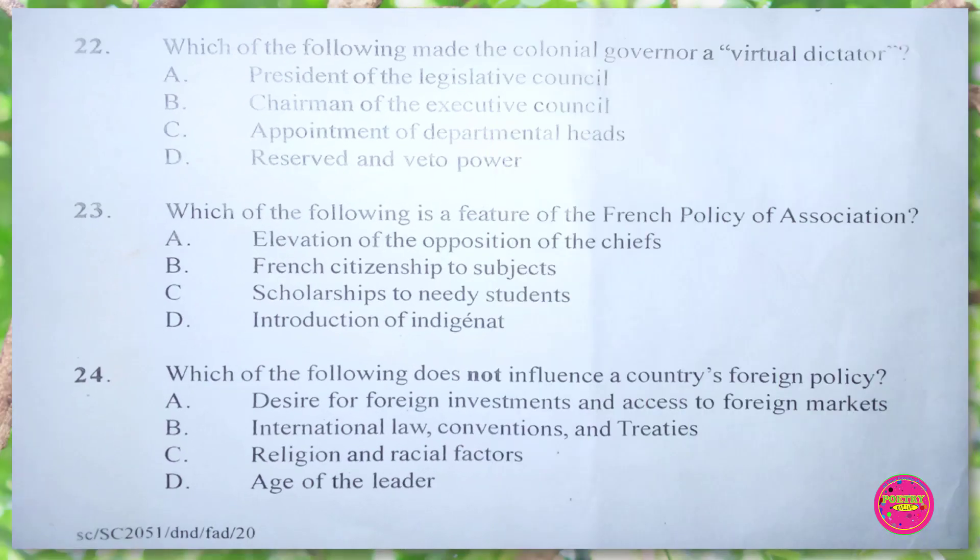Question 23. Which of the following is a feature of the French policy of association? A. elevation of the opposition of the chiefs, B. French citizenship to subjects.